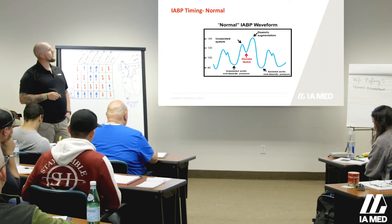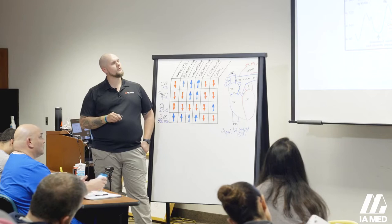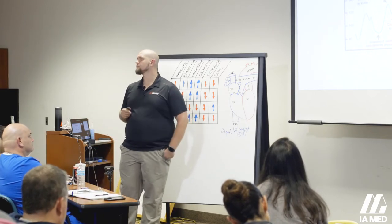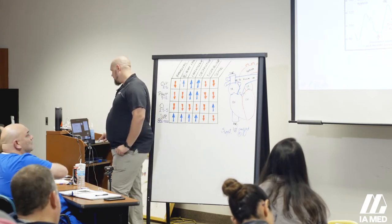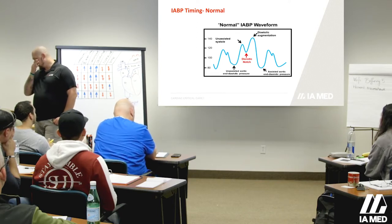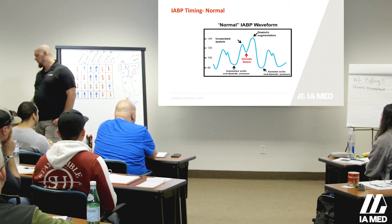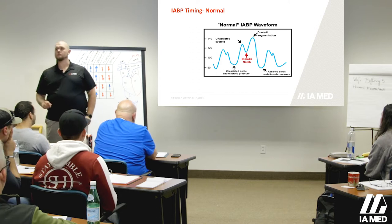A couple rules I want you to follow. If I were to cut off the page right here, what does this look like — something we covered earlier? An A-line. Exactly right. This complex looks just like something from an A-line, and that's exactly what it is. This is a 1:2 waveform, meaning every other beat is augmented or assisted. This is called the dicrotic notch, and it represents aortic valve closure.